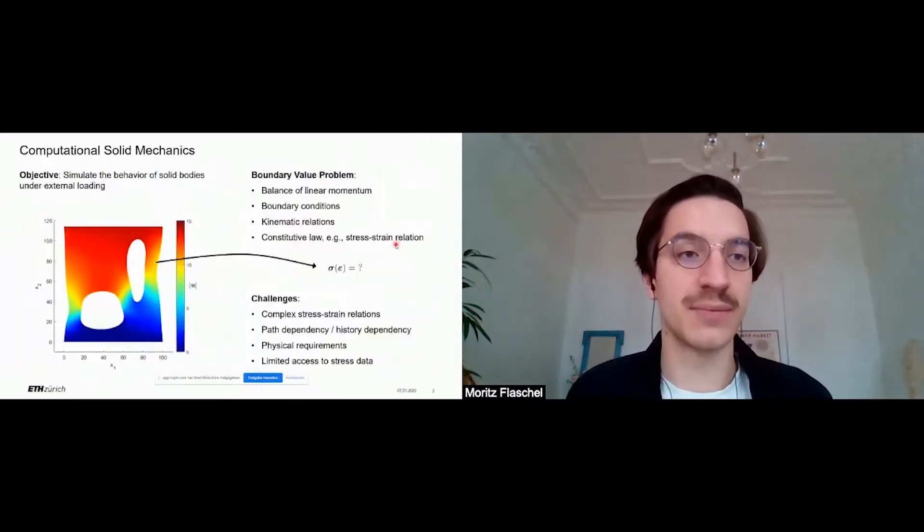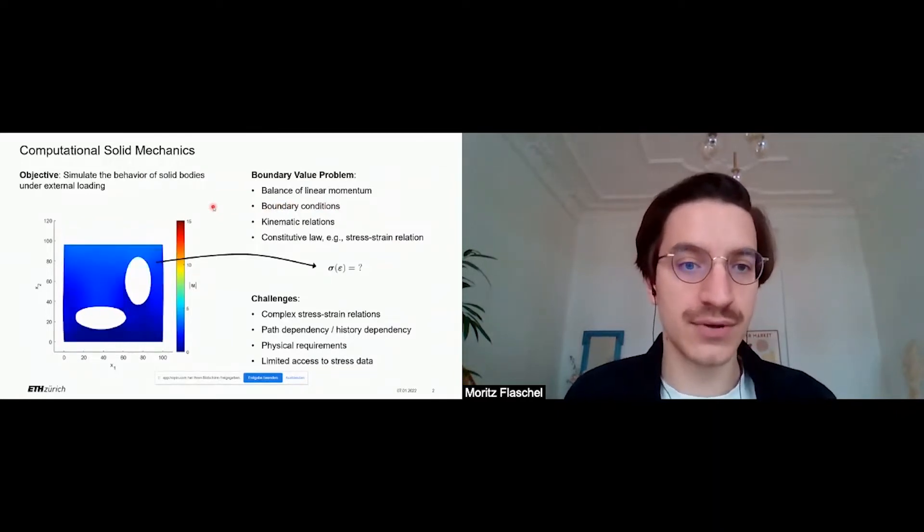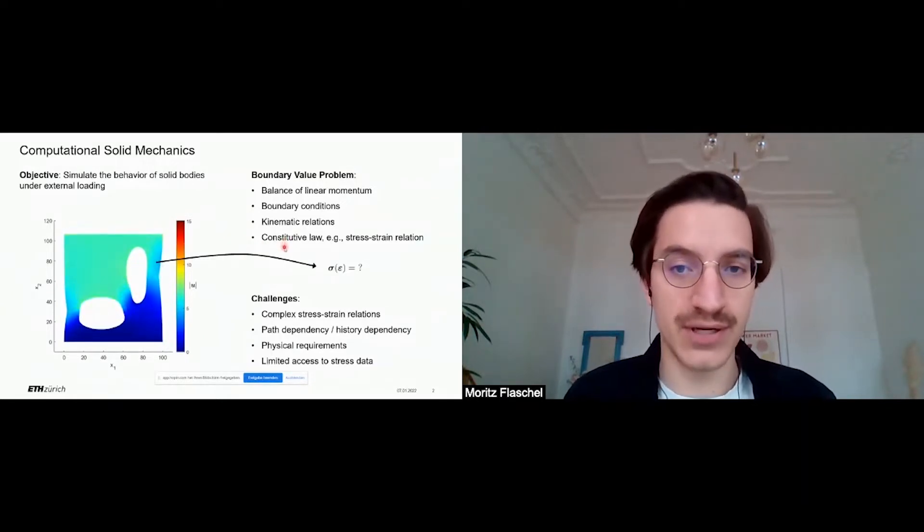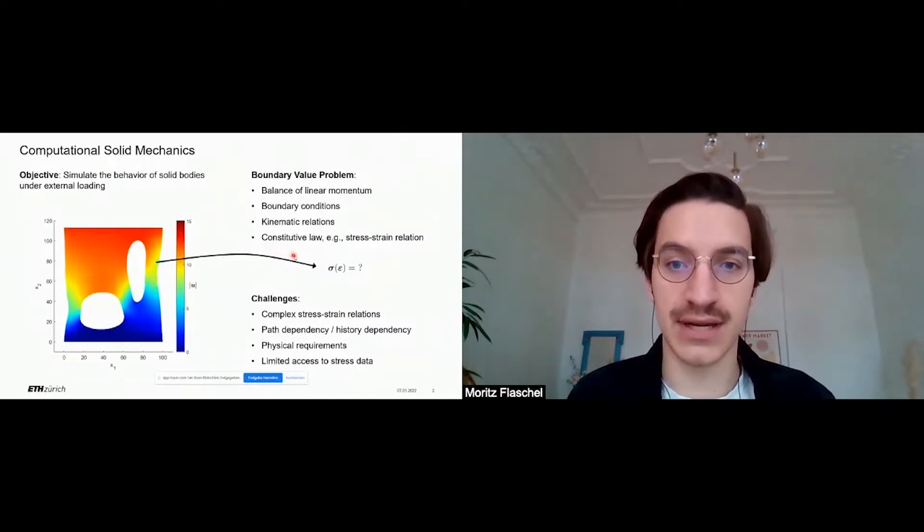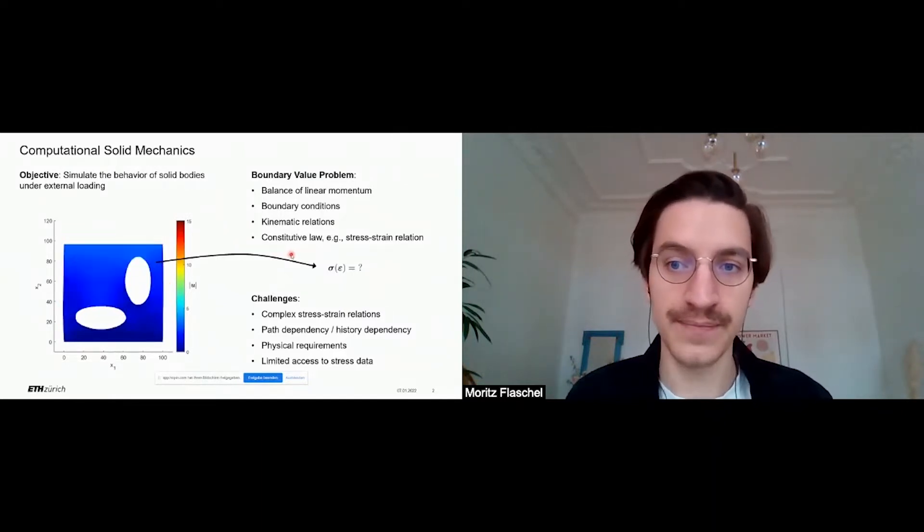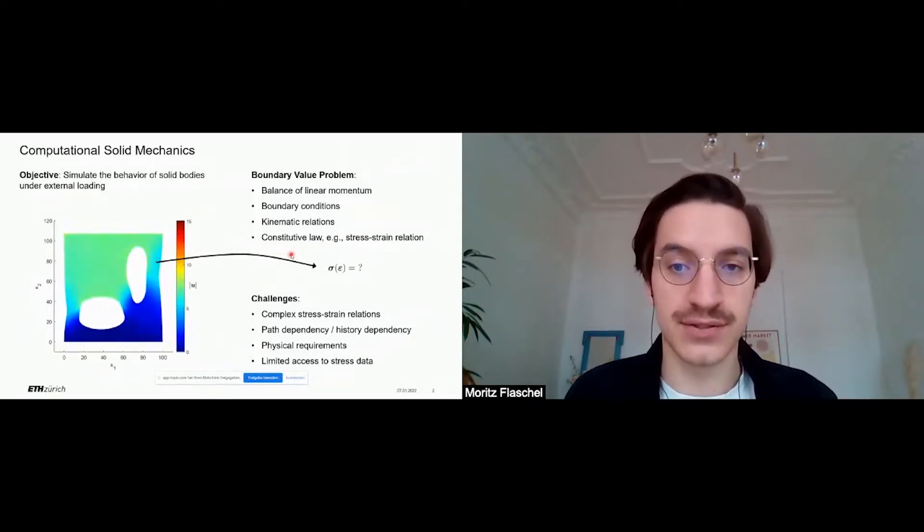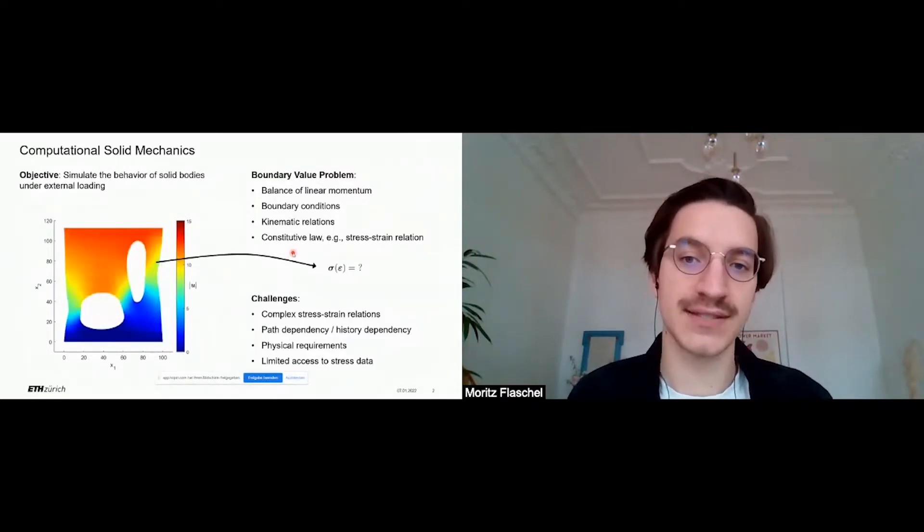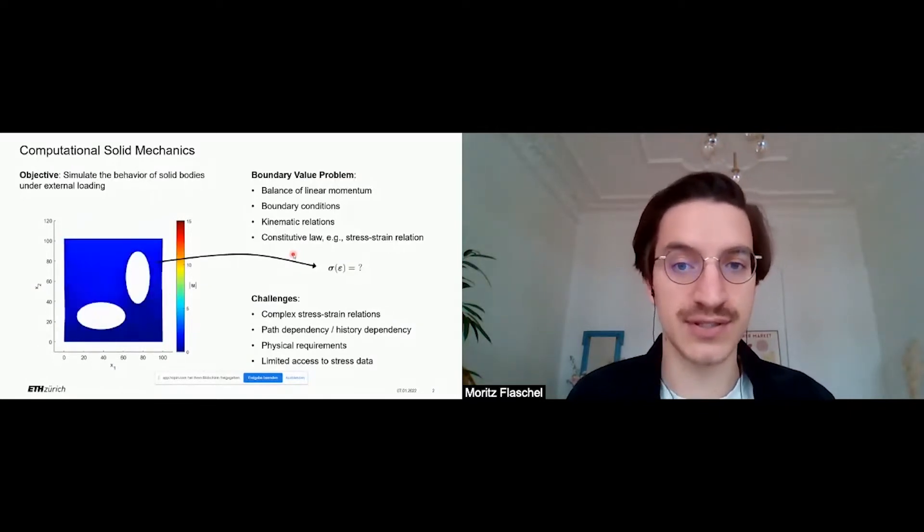The general objective in computational solid mechanics is to simulate the behavior of solid bodies under external loading. To do so, one typically solves boundary value problems. One very important ingredient to such boundary value problems is the material's characteristic constitutive law, which describes the stress-strain relation in the material. The constitutive law is typically associated with a lot of uncertainties. As for different materials, one has to choose different constitutive laws, and the choice is not always clear.